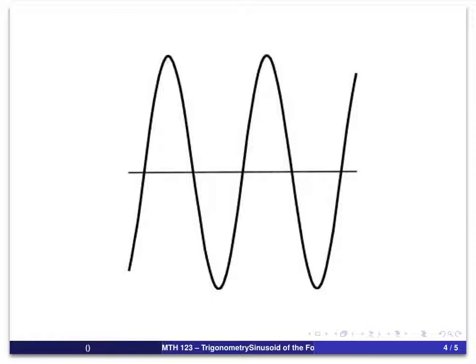So, for example, if we want to draw a sine curve, kind of bear with me as I try to draw a relatively straight line, we could draw our vertical axis right there. And that basically gives us just a little bit more than two complete cycles of a sine curve.